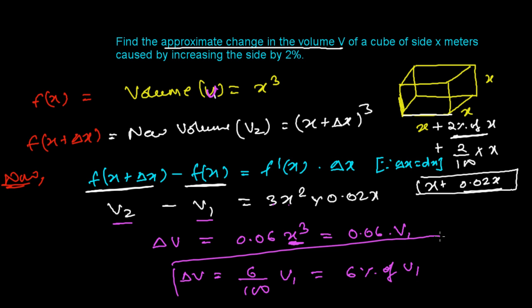V₁. So what is the change? The change in volume, approximately the change in volume is 6%. The volume is getting changed by 6%, or you can say simply 0.06 of the initial V, initial volume gets changed.